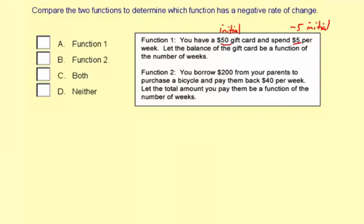Okay so one more time, the balance is $50 to start with, that's the initial value, you're spending $5 per week, so you're taking $5 off each week. So for that function of the balance of the gift card for the number of weeks, where you're spending $5 each time, which is a negative rate of change.